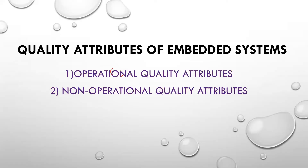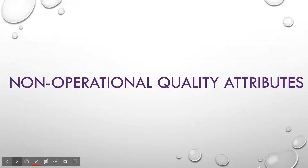Hello, in today's class we are going to see the quality attributes of the embedded system. The attributes which contribute to the quality characteristics of the embedded system are called quality attributes. It is broadly divided into two categories: operational quality attributes and non-operational quality attributes. Here we are going to study about the non-operational quality attributes — the characteristics which are focused when the system is in offline mode.